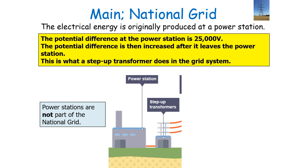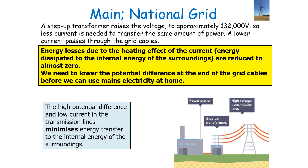The electrical energy in our national grid is produced originally at the power station. The potential difference at the power station is 25,000 volts. The potential difference is then increased after it leaves the power station, which is what the step-up transformer does. A step-up transformer raises the voltage to approximately 132,000 volts, so less current is needed to transfer the same amount of power.